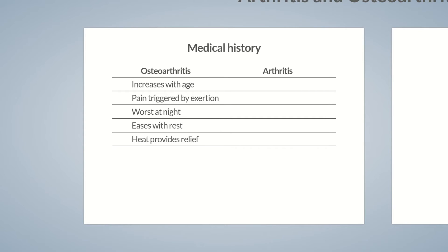So, to summarize the main points on osteoarthritis: osteoarthritis occurs primarily in older individuals. Patients usually report increased pain as a result of joint loading, which increases at night and is relieved by rest or heat. Now, let's move on to arthritis.